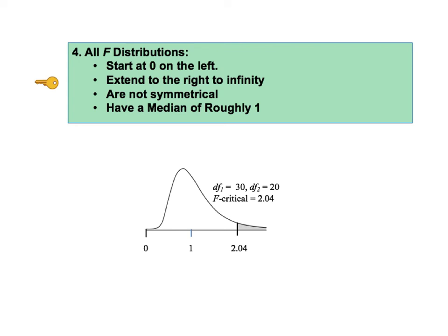Second, all F distributions extend to the right to infinity, with the probability growing closer and closer to zero, the point probability growing closer and closer to zero, but never touching zero.